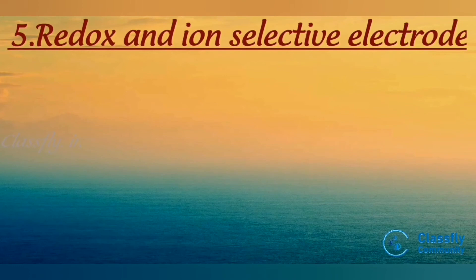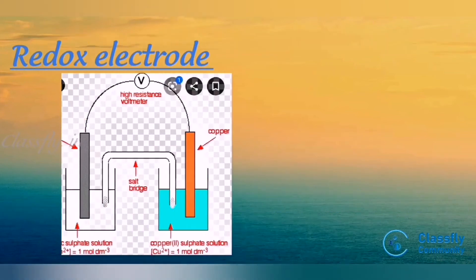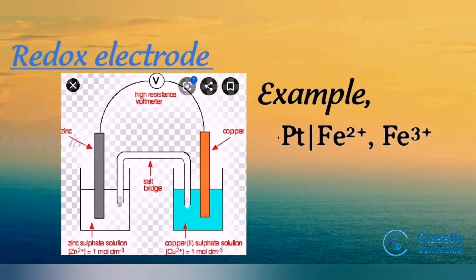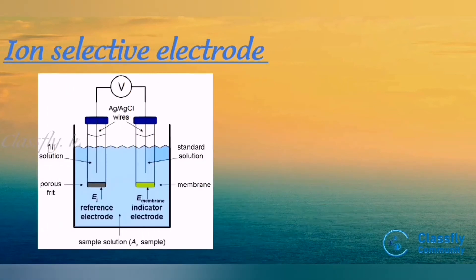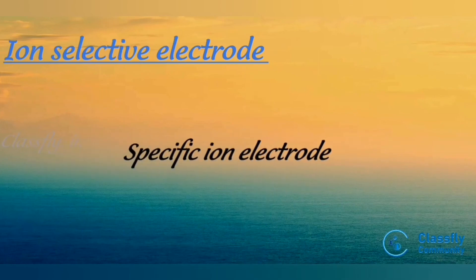The fifth type is the redox and ion selective electrode. This is divided into two subtypes. In a redox electrode, an inert metal like platinum is dipped in a solution containing ions of an active metal in two different oxidation states — for example, Pt | Fe²⁺, Fe³⁺. In an ion selective electrode, a membrane is in contact with a solution with which it can exchange ions — for example, the glass electrode, also known as a specific ion electrode.